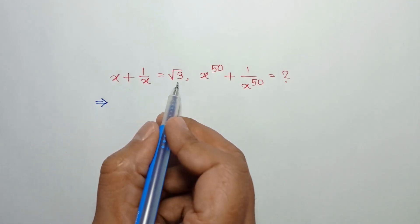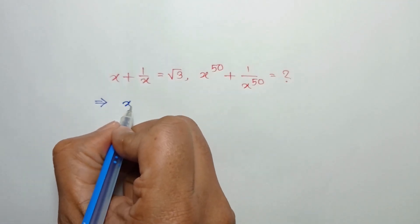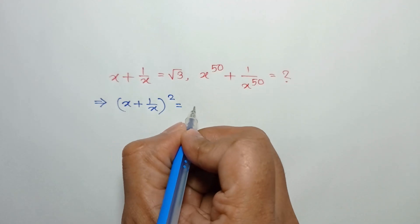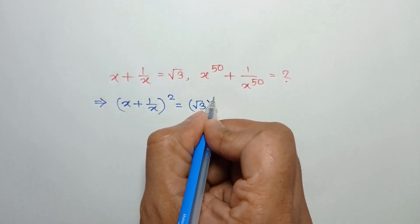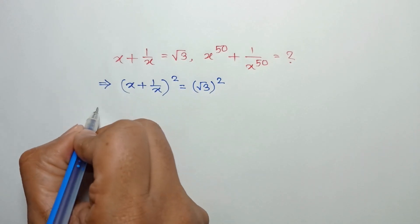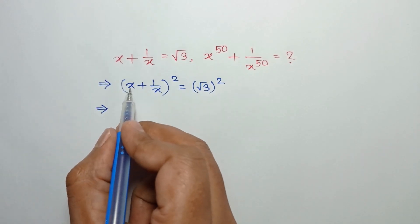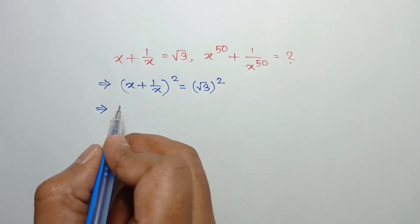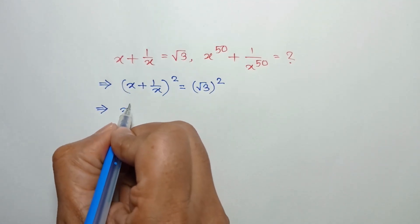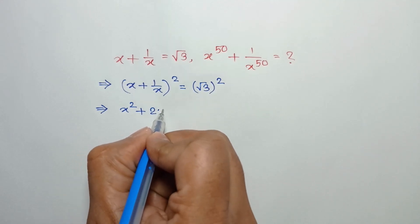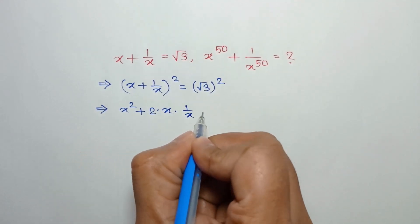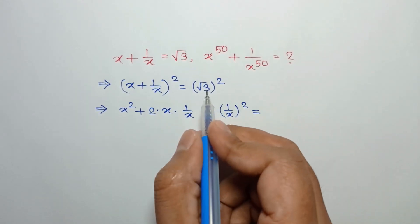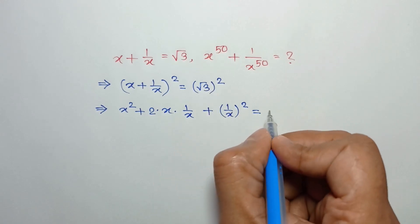Taking a square to both sides, we can write x plus 1 over x whole square is equal to square root of 3 whole square. Applying the formula a plus b whole square is equal to a square plus twice ab plus b square, we can write x square plus 2 times x times 1 over x plus 1 over x whole square is equal to square root of 3 whole square, which is equal to 3.